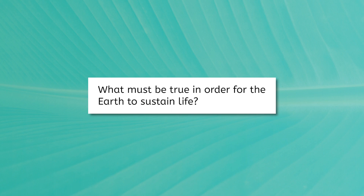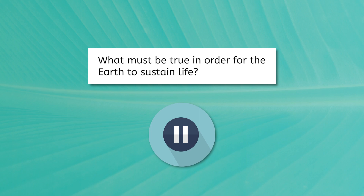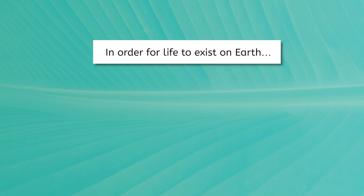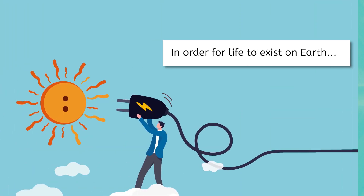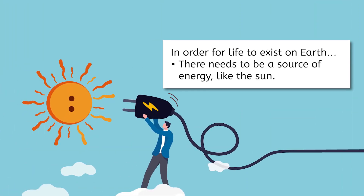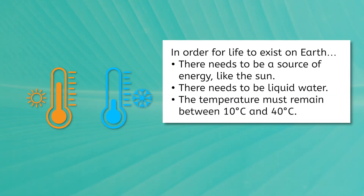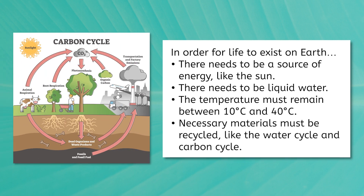What do you think must be true in order for the Earth to sustain life? Pause the video and make a list in your notes. In order for life to exist on Earth, there needs to be a source of energy, which is the sun. There needs to be liquid water. Temperatures must remain between 10 and 40 degrees Celsius. And necessary materials must be constantly cycled, such as the water cycle and carbon cycle.